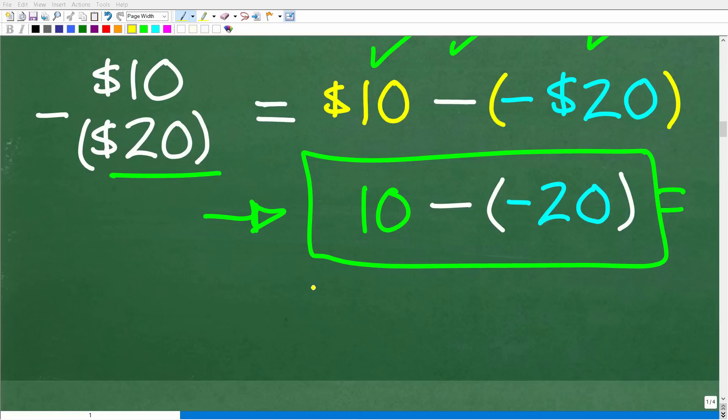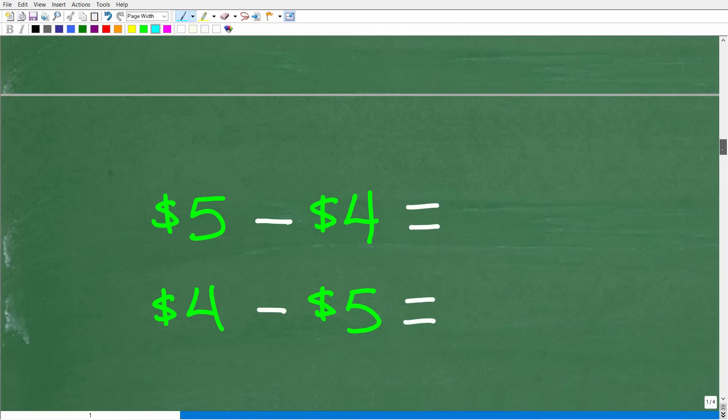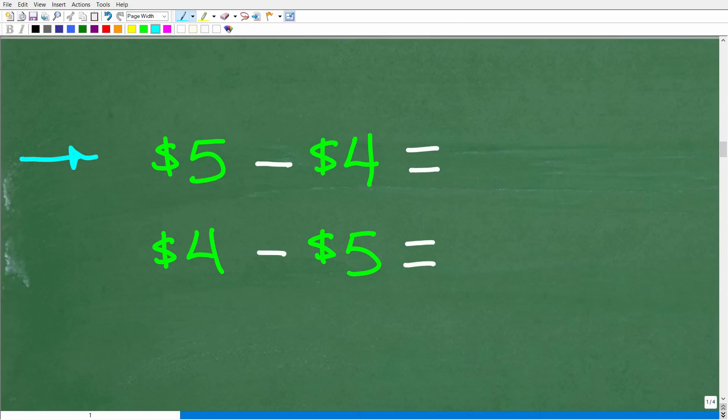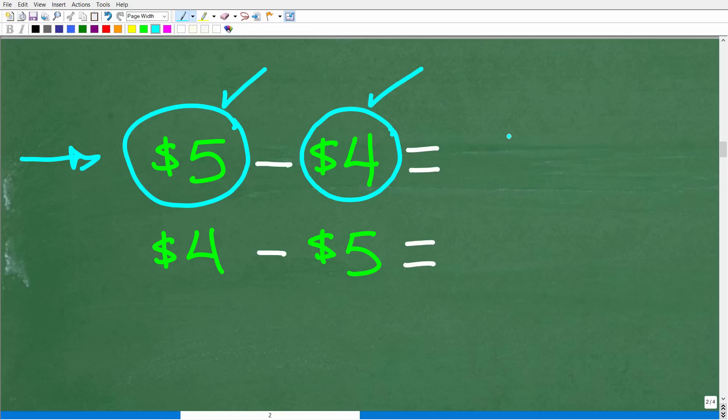All right. Now, before I show you the last steps to solve this problem, i.e. what 10 minus a minus 20 is equal to, let's do a fast review on how to add positive and negative numbers. So here I have two examples, and if you understand these two simple examples, you'll have the basic idea down on how to add positive and negative numbers. Okay, so here is our first example. We have $5, and we're subtracting away $4. Okay, so what do you think the answer here is? Well, if you're like, hey, Mr. YouTube Math Man, if I have $5, and then I take away $4, well, that means I have $1, and that is correct.